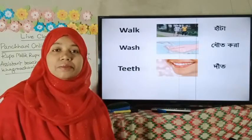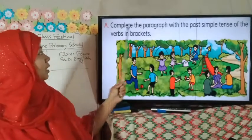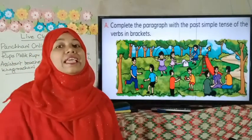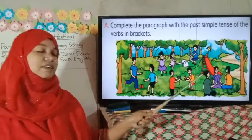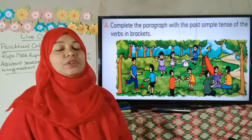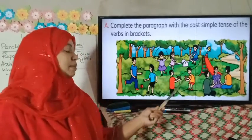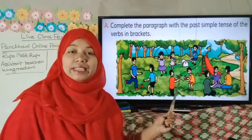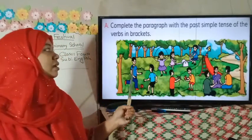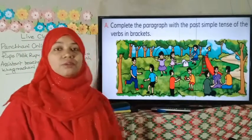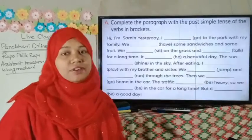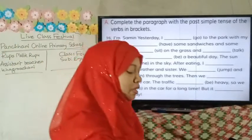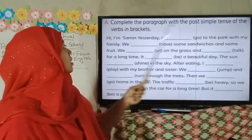Now I have to discuss Activity A from your text: 'Complete the paragraph with the past simple form of the verbs in brackets.' Dear students, look at your book. Here is Activity A and we can see a picture. In this picture, you have to complete a paragraph — some boys and girls are playing, they look excited, and they are going to visit a forest. We have to complete the paragraph using past simple tense.